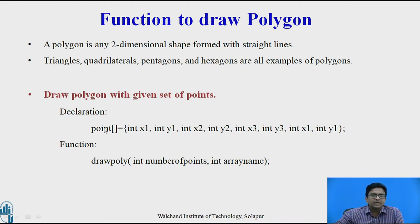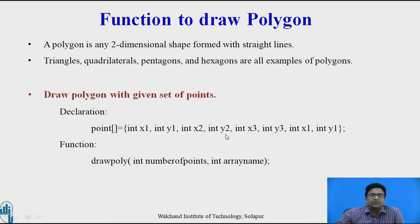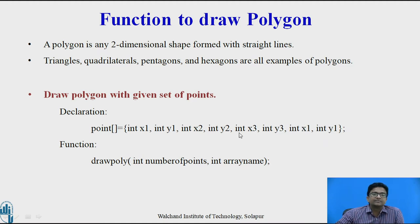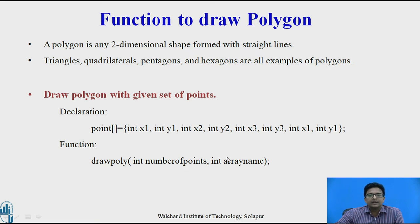We need to declare an array which includes all the set of points. So int x1, y1 will give you one point; int x2, y2 will give you another point; int x3, y3 will give you the third point; and then again x1, y1. In a polygon, the starting point and the end point should be the same, so that it forms a closed object. We use the drawPoly function, which has parameters: int number of points and int array name.